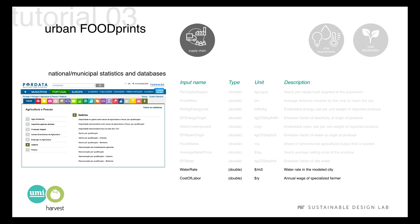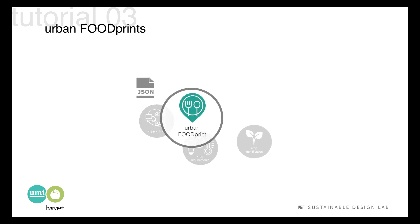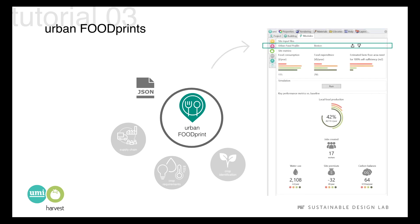On the UMI project tab, you will also need to update the price and emission factor of electricity according to the location of your project. And once you have all this data, you can upload your urban food profile into Harvest and run your simulation.